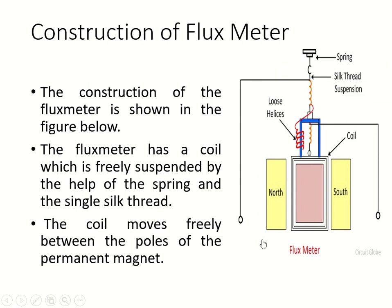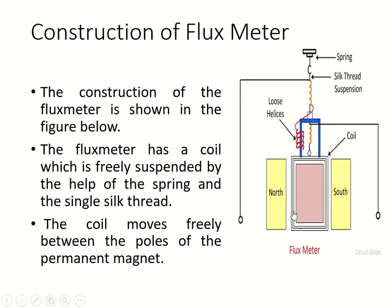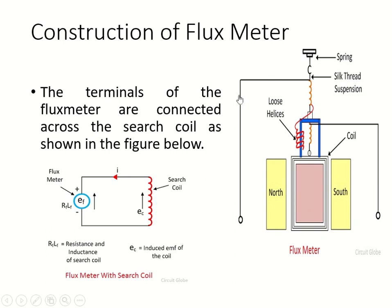The construction of the flux meter is shown in the figure. It has a coil which is freely suspended by the help of a spring and a single silk thread. The coil moves freely between the poles of two permanent magnets. These two terminals of the flux meter are connected as shown in the figure.